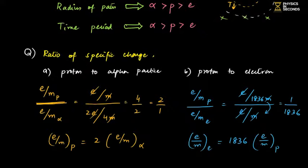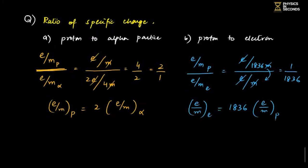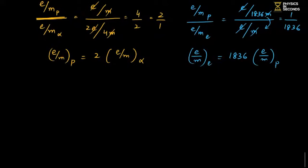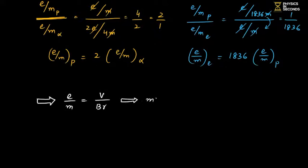You should know how to calculate Specific Charge. From the mathematical relations, we can also develop momentum and kinetic energy relations. Using the velocity formula e/m = v/(BR), cross-multiplying gives mv = eBR — so linear momentum equals eBR when a charged particle moves in a circular path in a magnetic field.